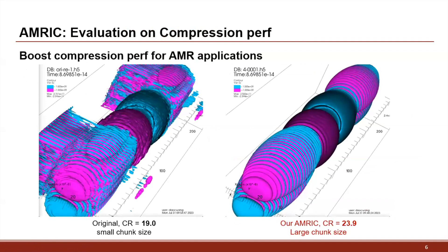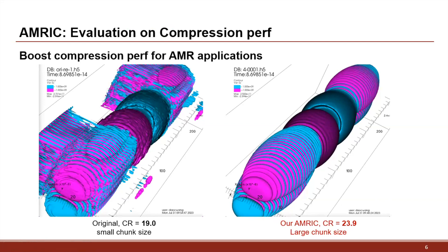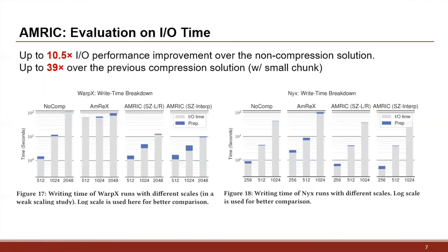After the optimization, our method improves compression performance in terms of both compression ratio and reconstruction quality. The right-hand side shows our work, which achieves almost lossless quality while still reaching about 24 times compression ratio — using a WarpX simulation. We also improve the I/O performance compared to both the previous solution and the no-compression solution.